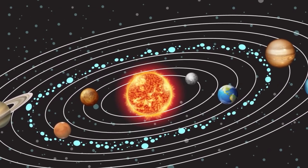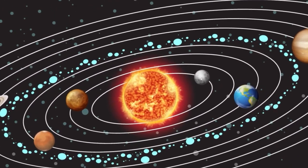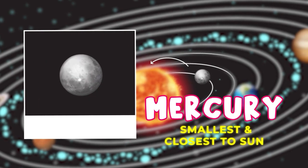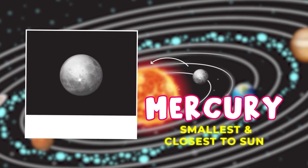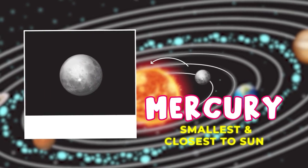First, let's meet the inner planets, the ones closest to the sun. Mercury. This is the smallest planet and the closest to the sun. It's really, really hot during the day, but super cold at night.